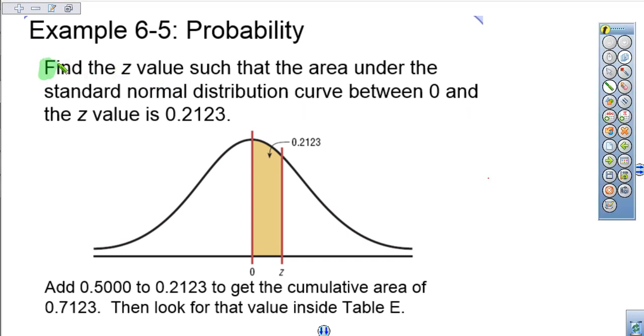You'll notice right here it says find the z-value. So now we're going completely the other direction. We're going to use the area under the curve to find the z-value, to find the standardized score.